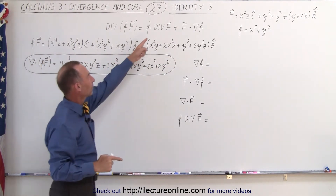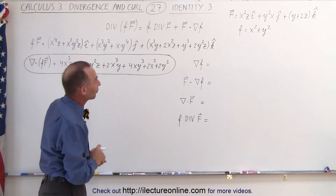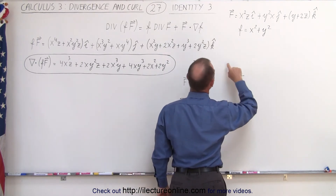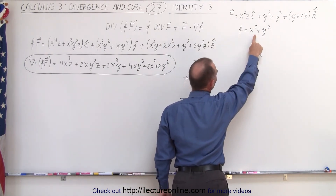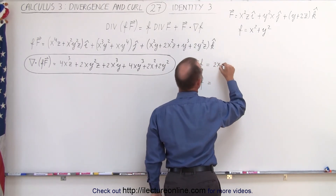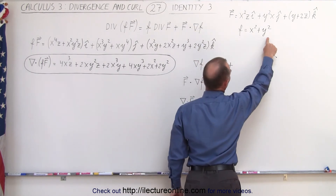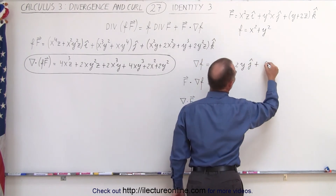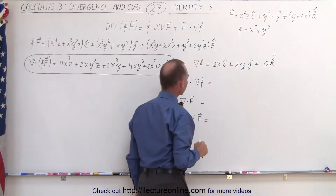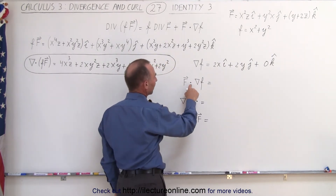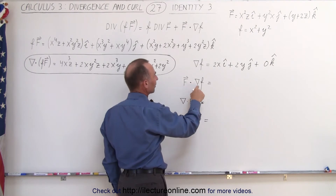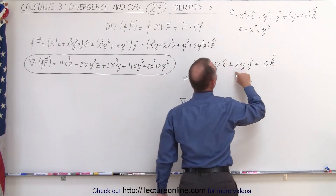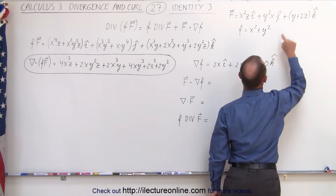Now that should equal the sum of the two right-side terms, so let's calculate those. First we take the gradient of f, which gives us a vector quantity: the partial derivative with respect to x in the i-direction gives 2x, the partial with respect to y gives 2y in the j-direction, and since there are no z terms, zero in the k-direction. Now we multiply via the dot product the vector field times the gradient of the scalar — multiplying x, y, and z components together respectively.